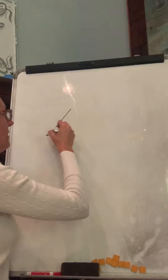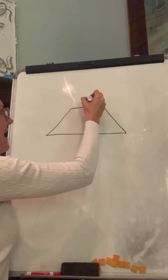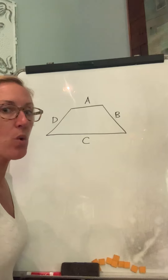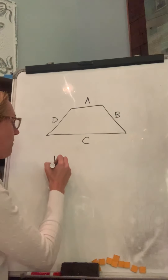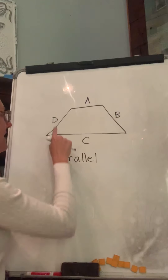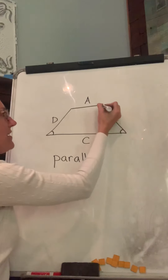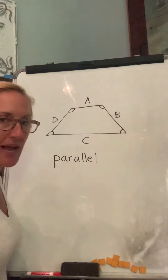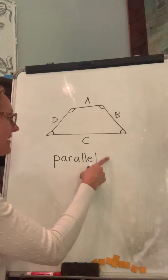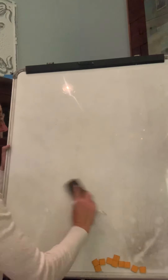Now here's a trapezoid. This is line A, line B, side C, and side D. Which sides are parallel to each other? Is it A and D, B and C, D and B, or A and C? Write that down, then label each of those angles as a right angle, obtuse angle, or acute angle.